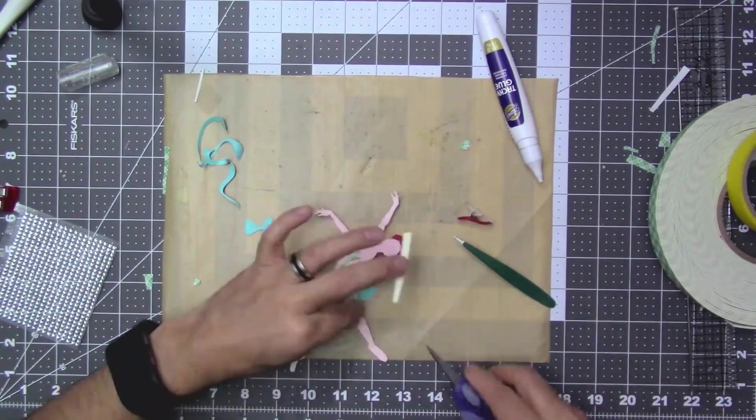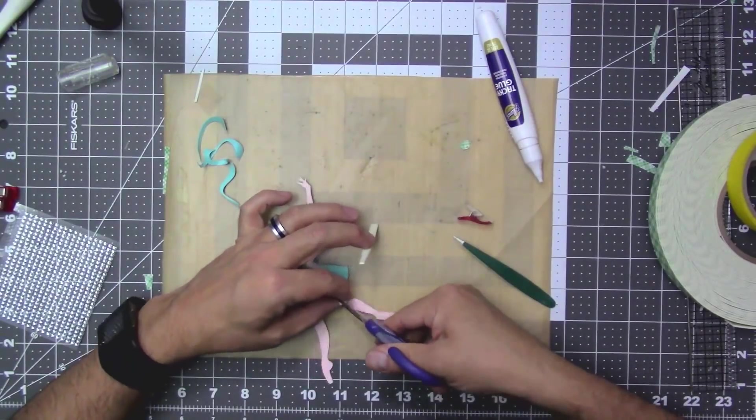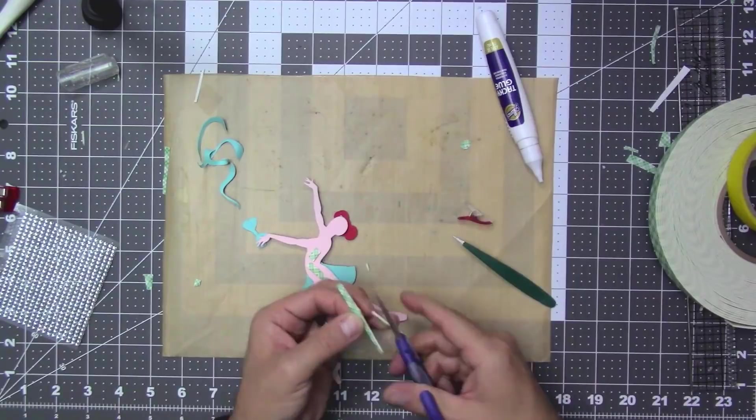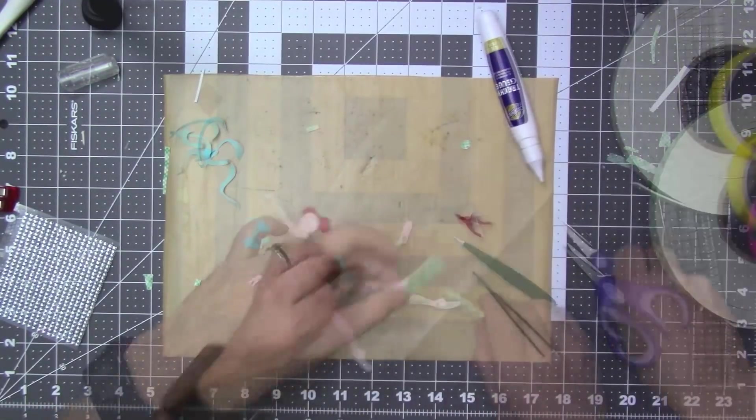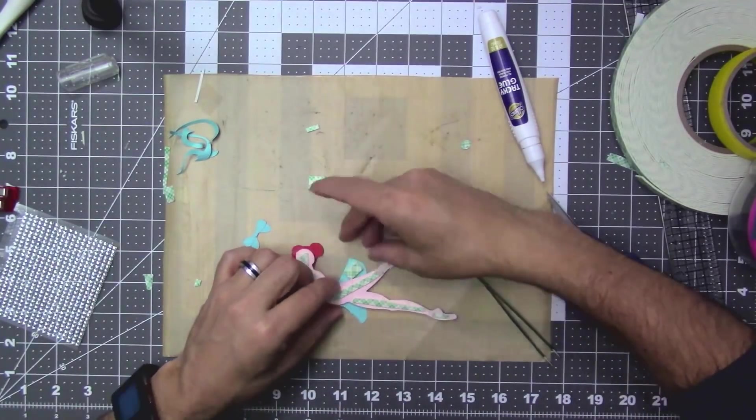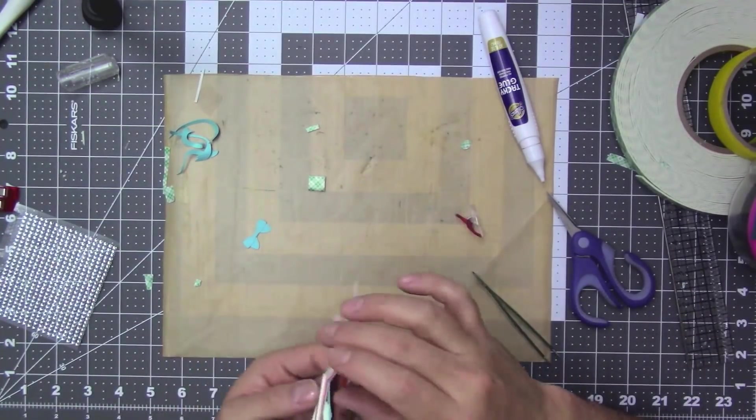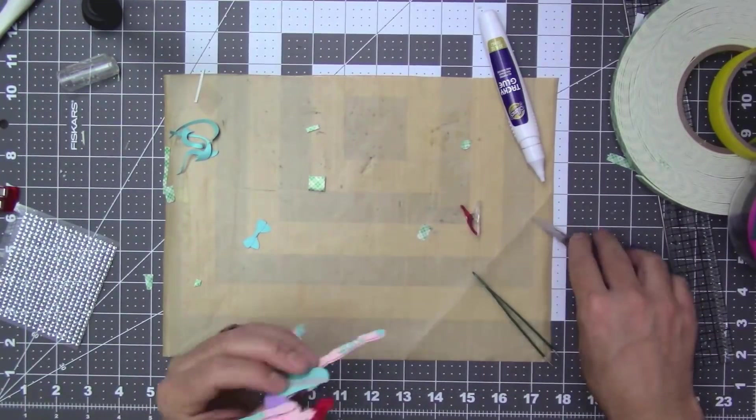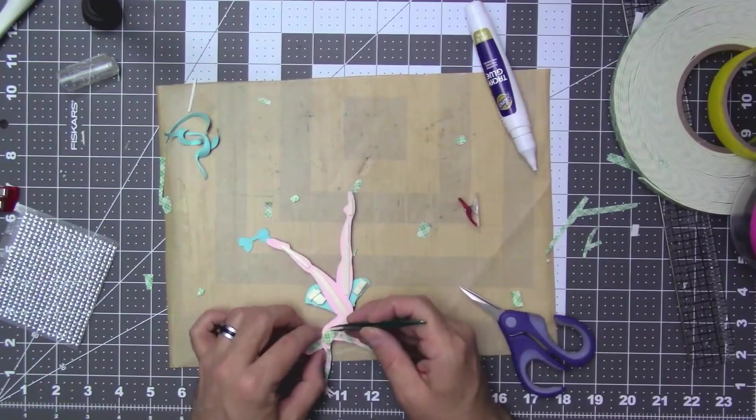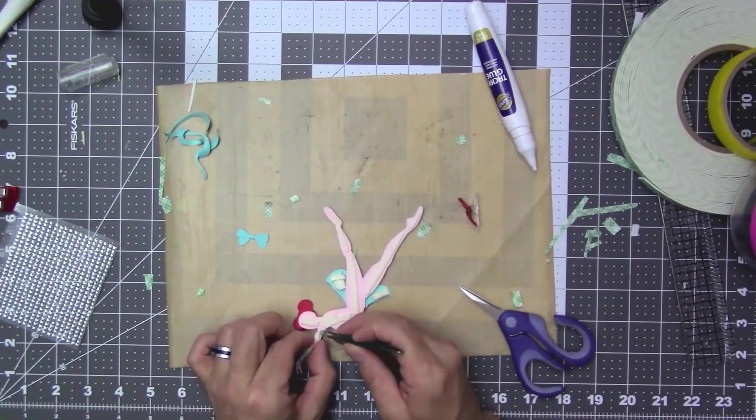Add foam tape to the back of the ballerina. You will put your ballerina on your back piece at this point. Remember to use a doubled piece of foam tape on the ends of the dress. Remove the backing.